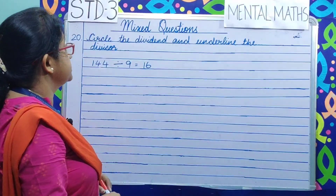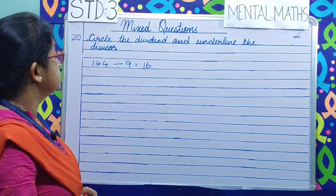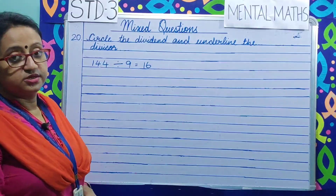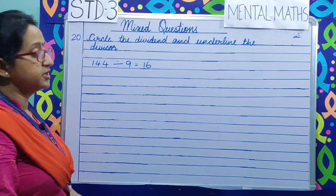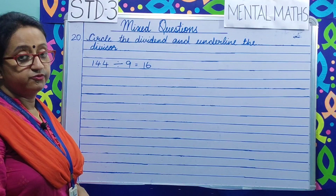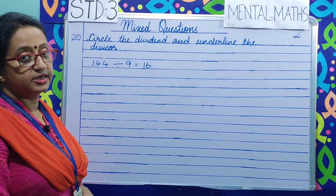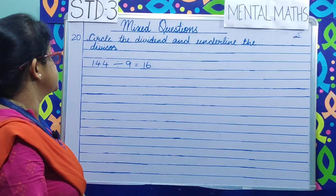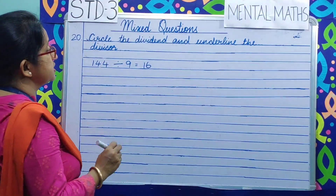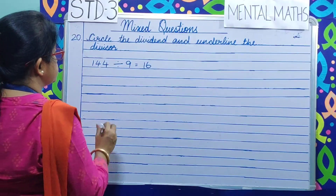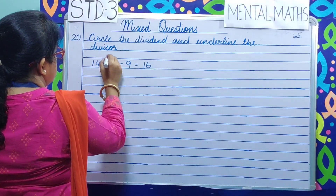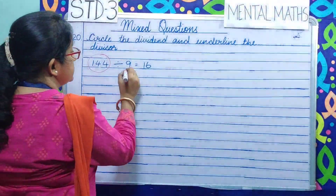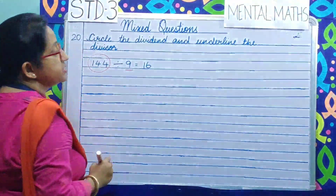Question number 20. Circle the dividend and underline the divisor. The dividend is the number which you are dividing, and the divisor is the number with which you are dividing. So circle the dividend and underline the divisor.